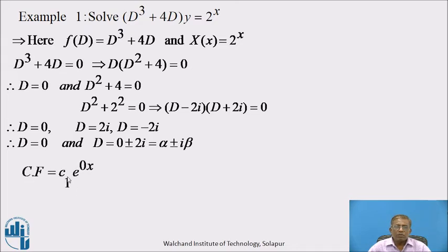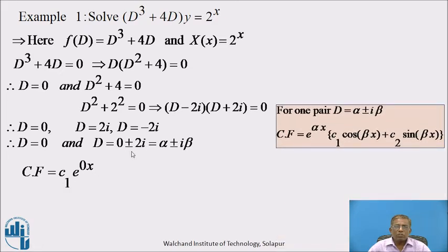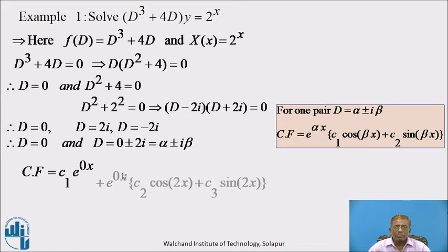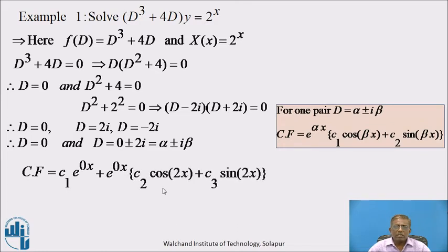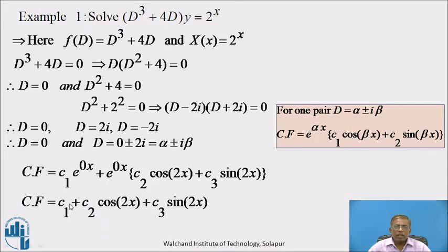Hence, the complementary function: for D = 0, we get C₁·e^(0·x) = C₁. For the complex pair 0 ± 2i, using the formula e^(αx)(C₂ cos βx + C₃ sin βx) with α = 0 and β = 2, we get e^(0·x)(C₂ cos 2x + C₃ sin 2x) = C₂ cos 2x + C₃ sin 2x. Therefore, CF = C₁ + C₂ cos 2x + C₃ sin 2x.